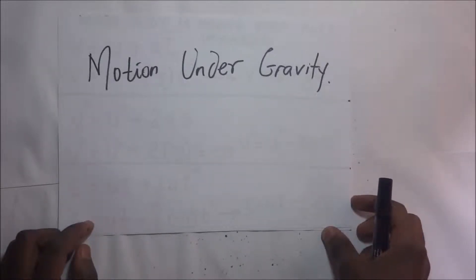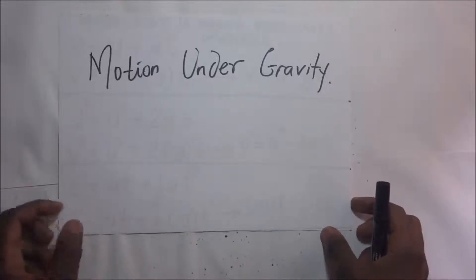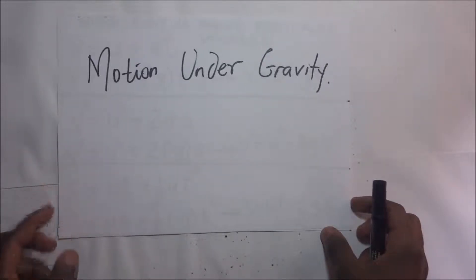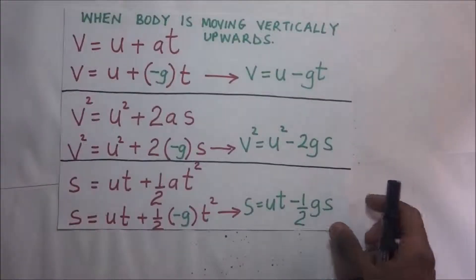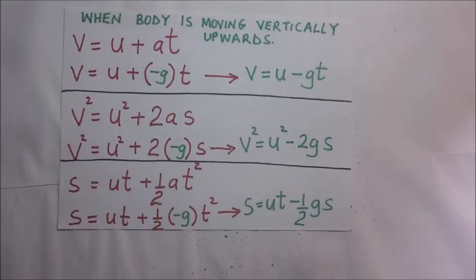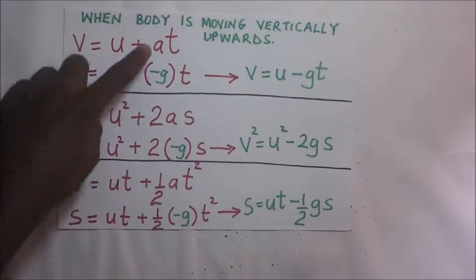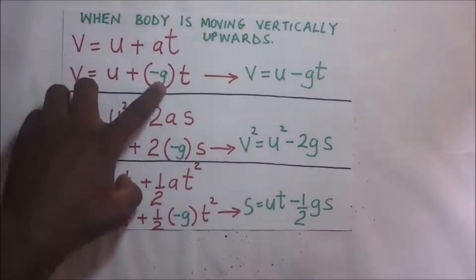Just like we had earlier derived our equations of motion or uniform acceleration formulas, those very equations are going to be used here when we are dealing with motion under gravity. Definitely the value of a is going to become negative g.